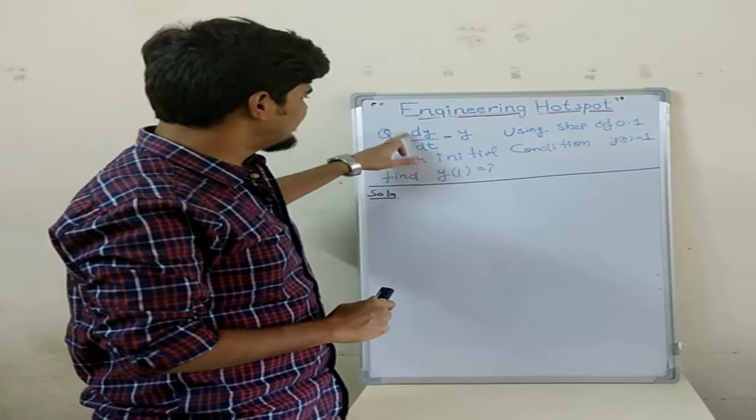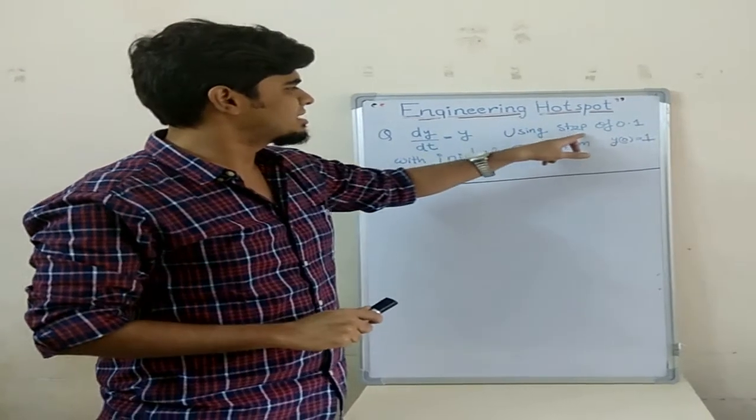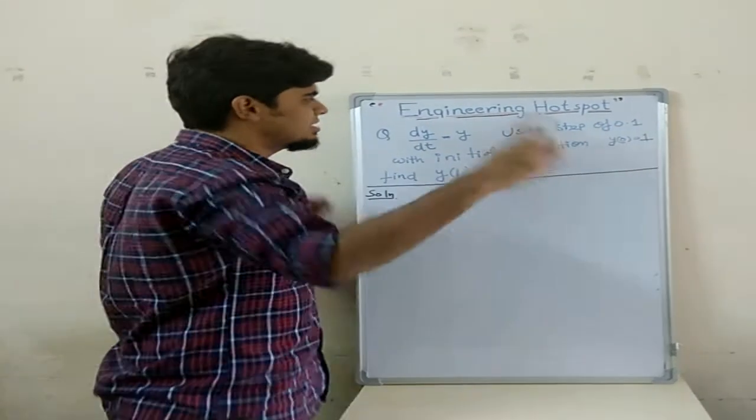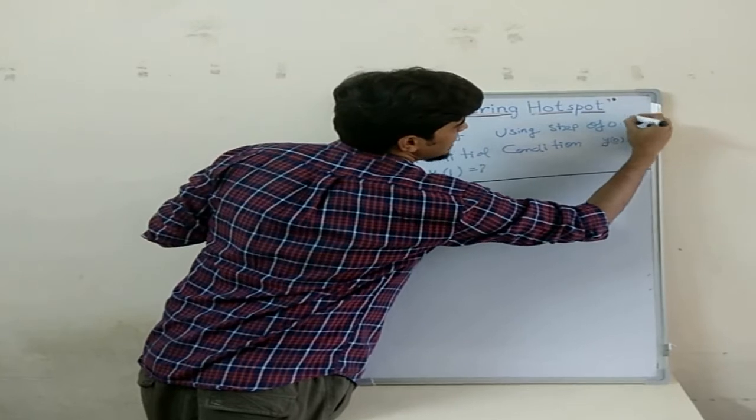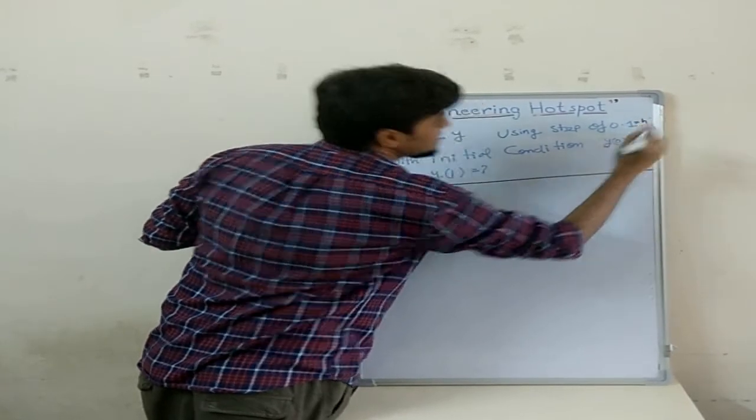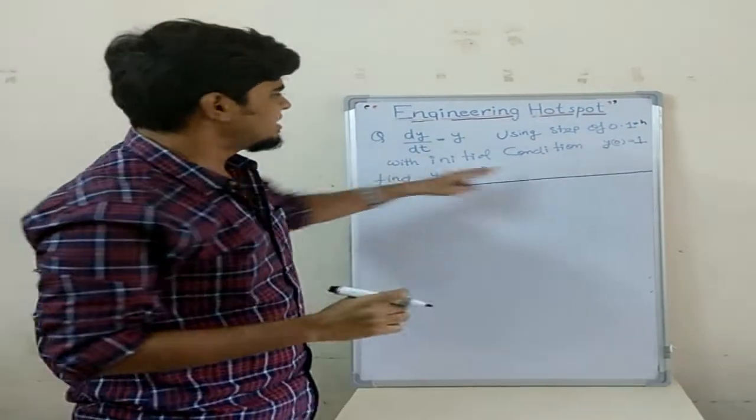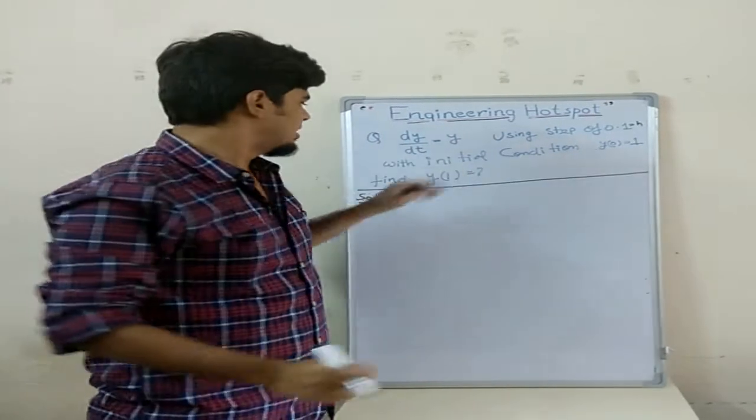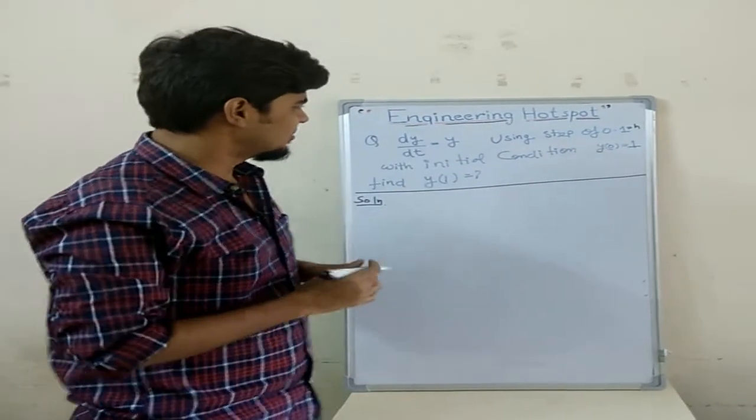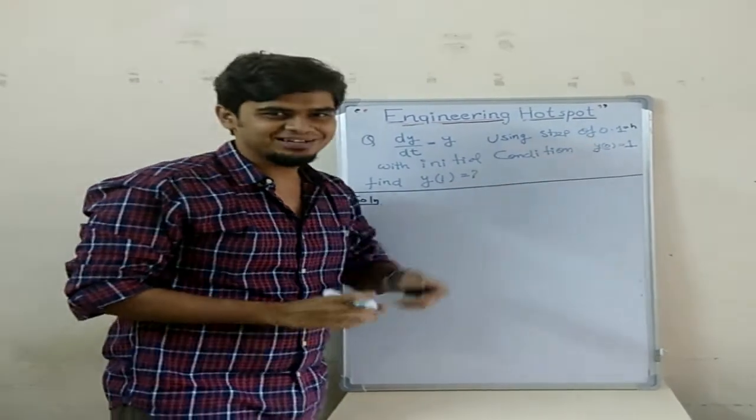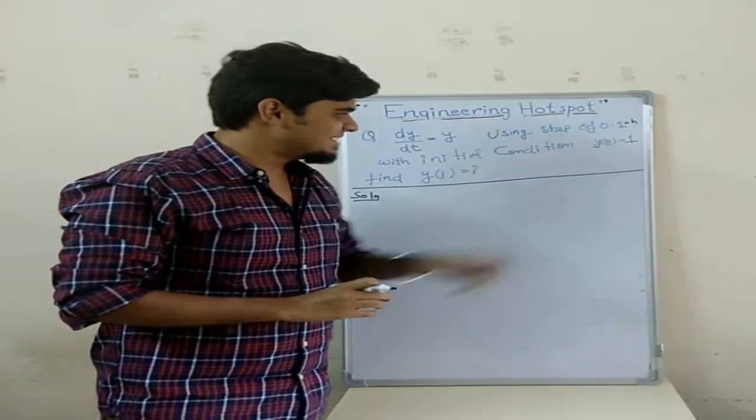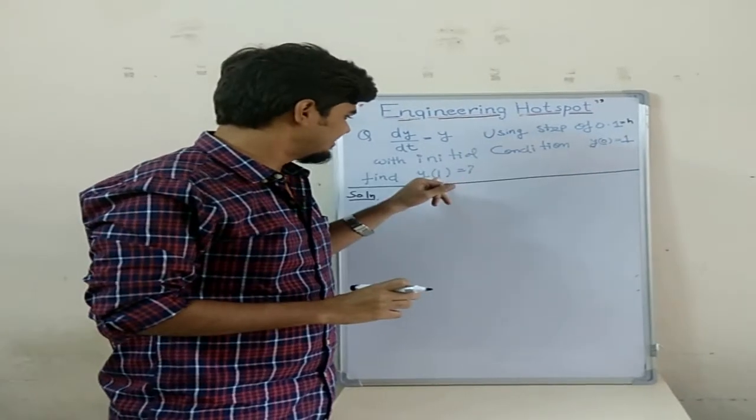Here the question given is dy/dt equals to y using step size of 0.1. What is step size? This is h, nothing but this is h. Step size is 0.1 and initial condition is at 0, and they asked to find y(1).